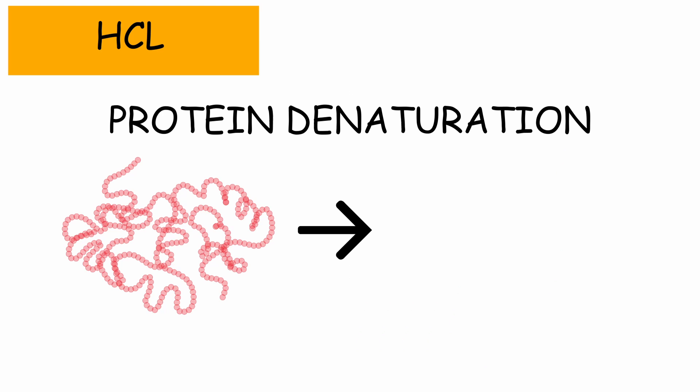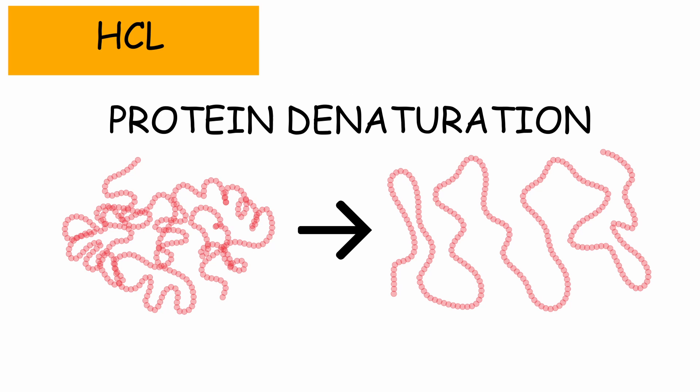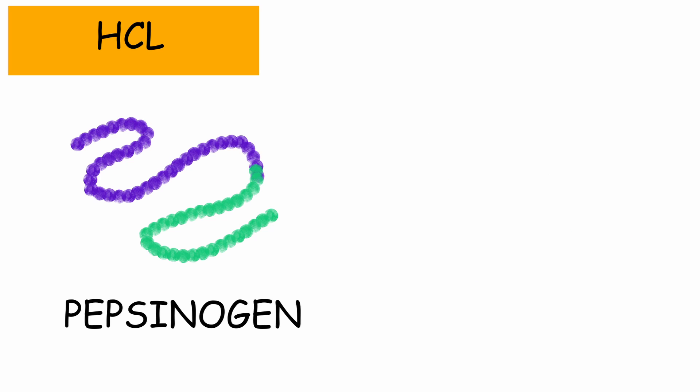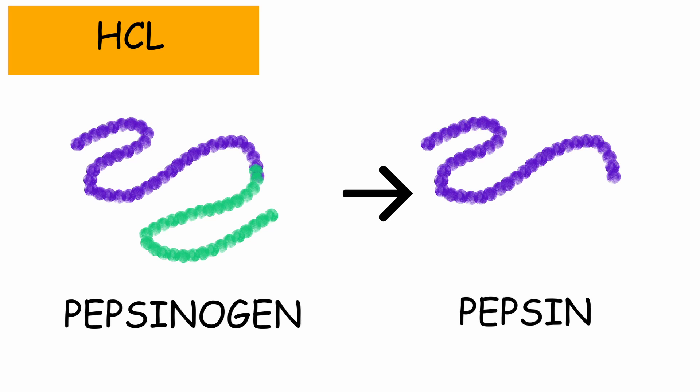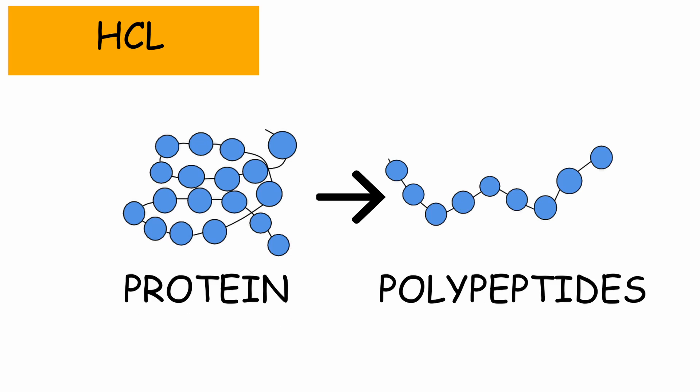The acidic medium also causes the proteins present in the food to denature, causing them to uncoil, which exposes their structure by creating larger surface area. The acidic environment also triggers the conversion of pepsinogen to pepsin. Pepsin is an enzyme that breaks down protein into smaller polypeptides.